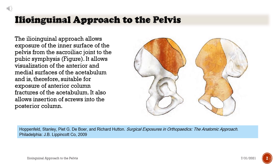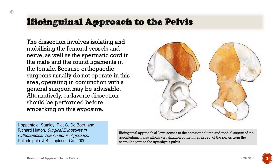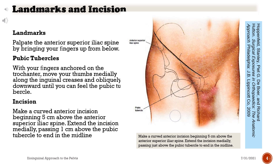The approach also allows the insertion of screws into the posterior column. The dissection involves isolating and mobilizing the femoral vessels and nerve, as well as the spermatic cord in the male and the round ligament in the female. Because orthopedic surgeons usually do not operate in this area, operating in conjunction with a general surgeon may be advisable. Alternatively, cadaveric dissection should be performed before embarking on this exposure.